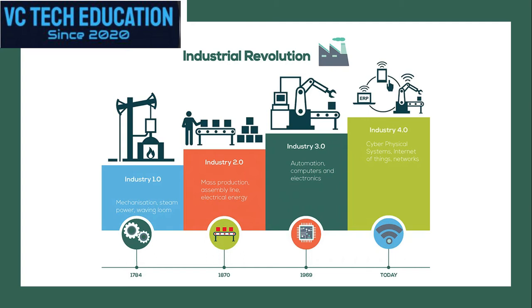Industry 4.0 is related to Internet of Things. Industrial Revolution started its journey in 1784 with Mechanism of Steam Power and Weaving Loom. Then in 1870 Industry 2.0 presented Mass Production Assembly Lines using Electrical Energy. Industry 3.0 introduced Automation, Computers and Electronics with Large Scale Integrated Circuits, in the era of 1969. Industry 4.0 is the present stage where Cyber Physical Systems, Internet of Things and Networks support the Industrial Revolution.